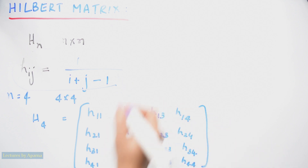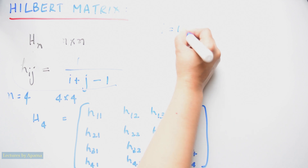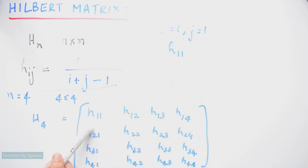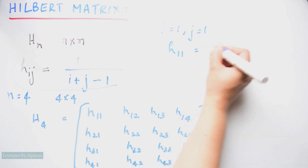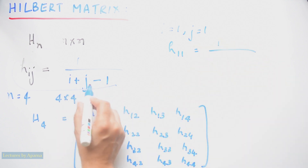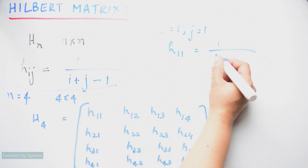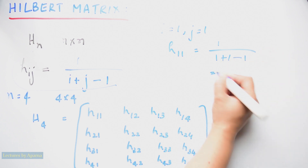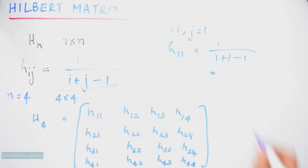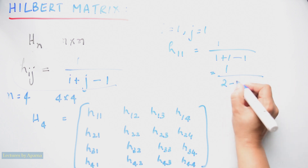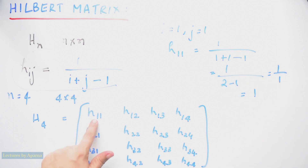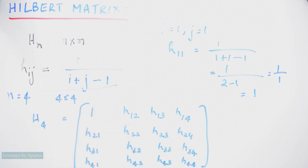First we have to substitute i = 1, j = 1 to find H11. H11 will be equal to 1 by (i + j - 1). i is 1 plus j is 1 minus 1. So this will be equal to 1 divided by (2 - 1) = 1 by 1 = 1. So this element is equal to 1, substitute 1 here.